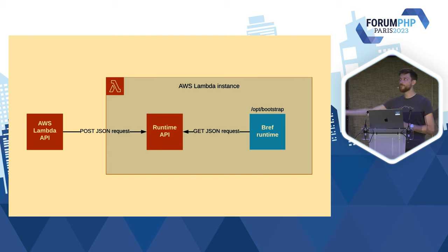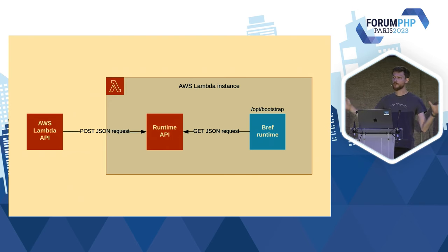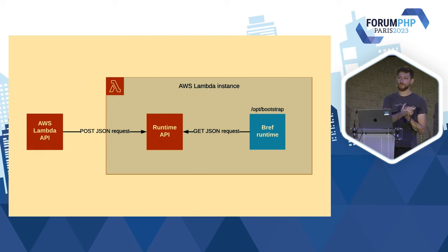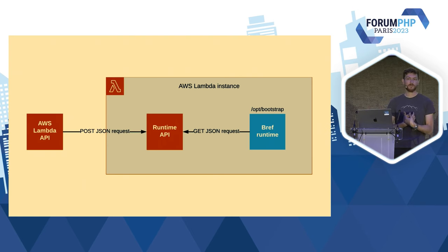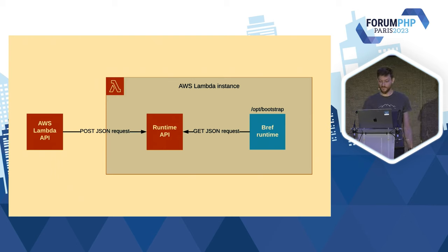C'est Bref qui vient se connecter à la runtime API — et non pas quelque chose qui est envoyé à notre code PHP sur un port. On ne fait pas tourner un serveur sur Lambda. C'est du pull plutôt que du push. J'ai posé la question aux équipes AWS Lambda pourquoi c'était comme ça, et ils m'ont expliqué que c'était le plus petit dénominateur commun à tous les langages — pouvoir faire un appel HTTP en Go, en Bash, en COBOL ou en n'importe quoi. C'est possible, alors que démarrer un serveur qui accepte des connexions TCP, c'est beaucoup plus difficile selon les langages.